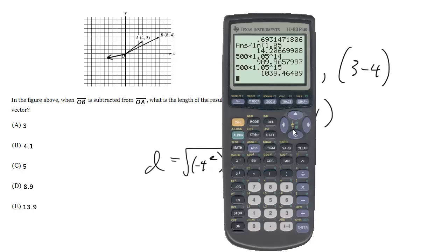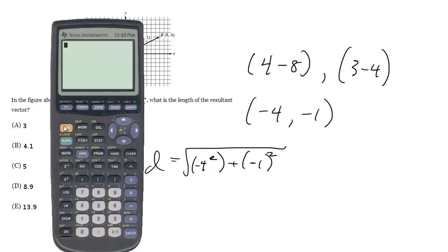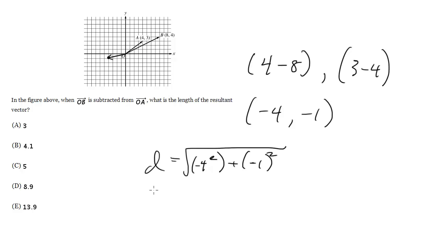All right, so let's go ahead and figure that out. So we're going to get 16 plus 1, which is 17. So the square root of 17 is 4.1. And that is choice B.